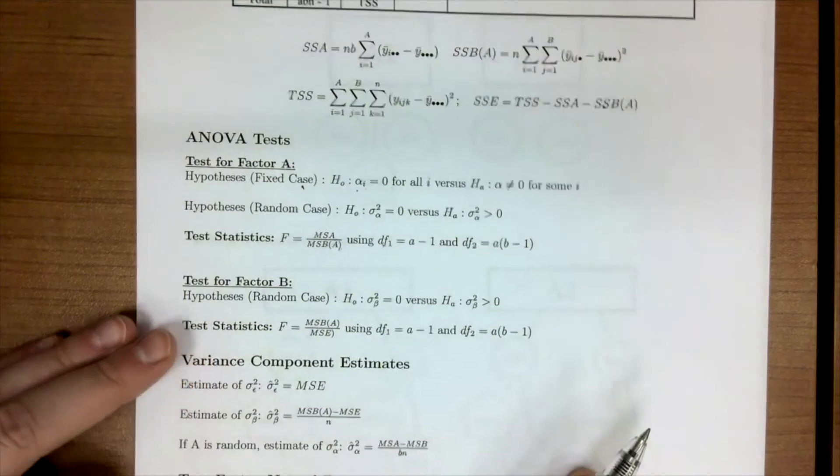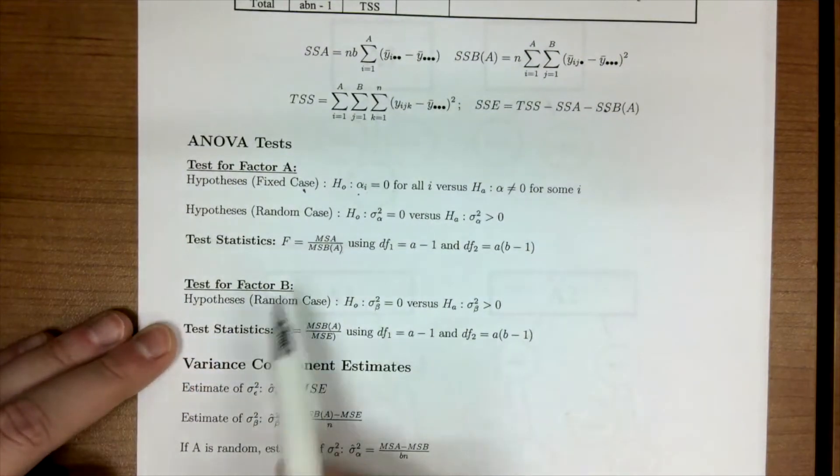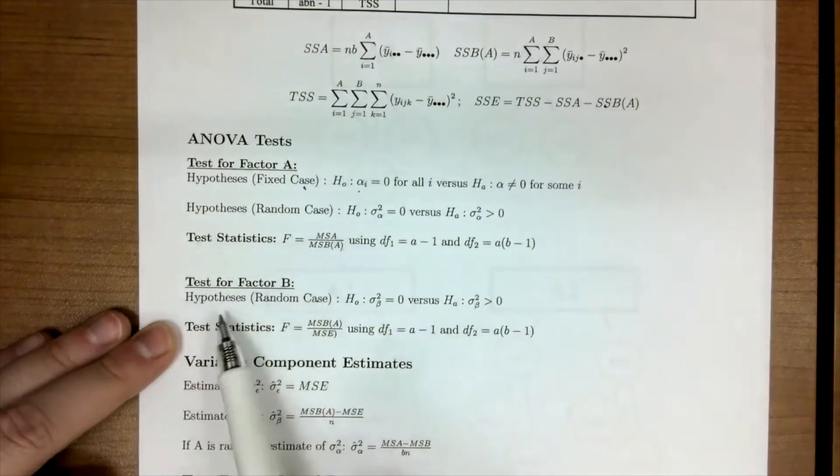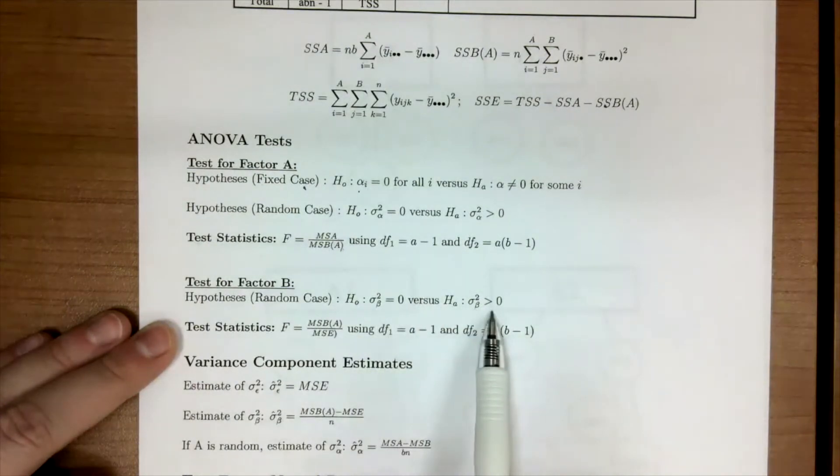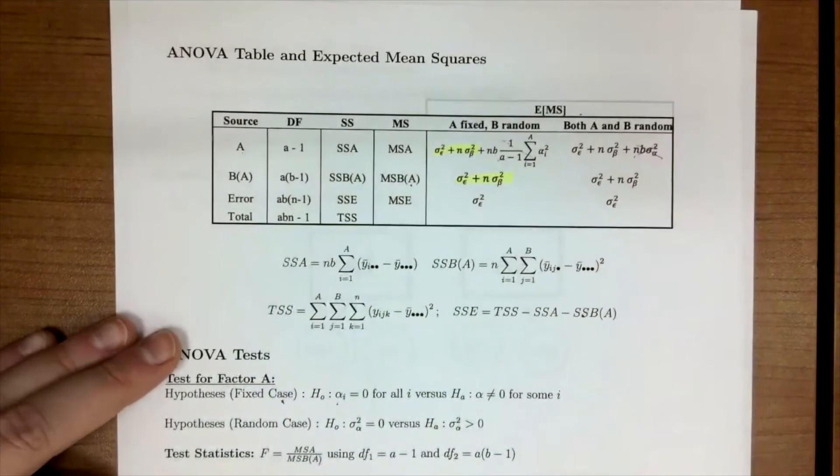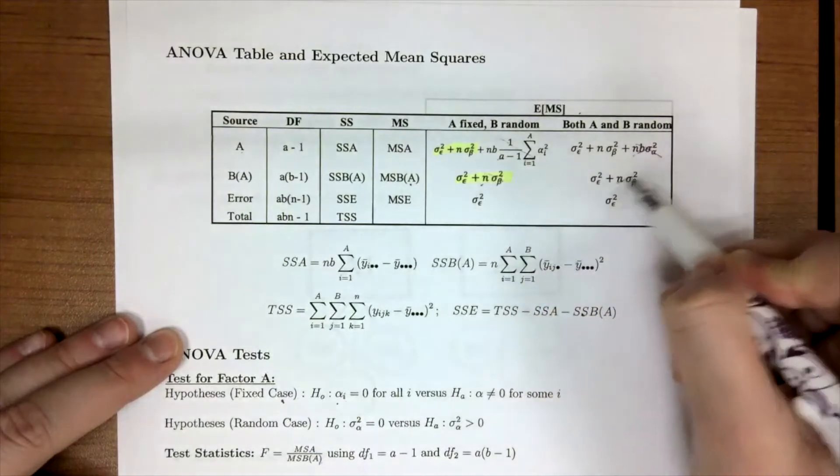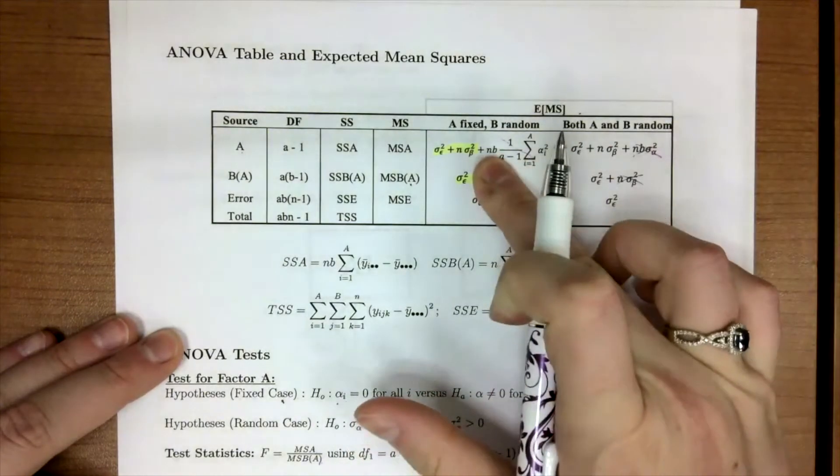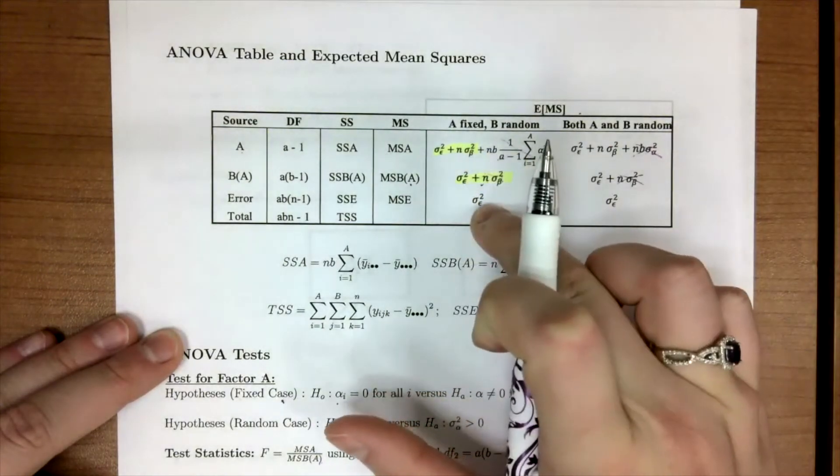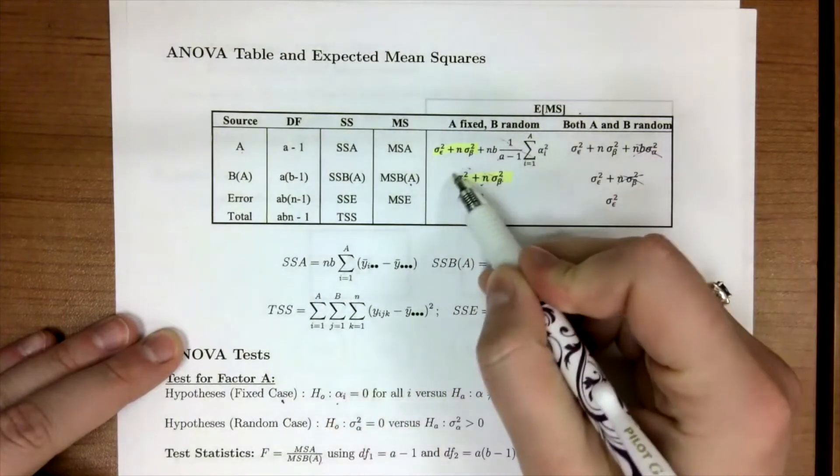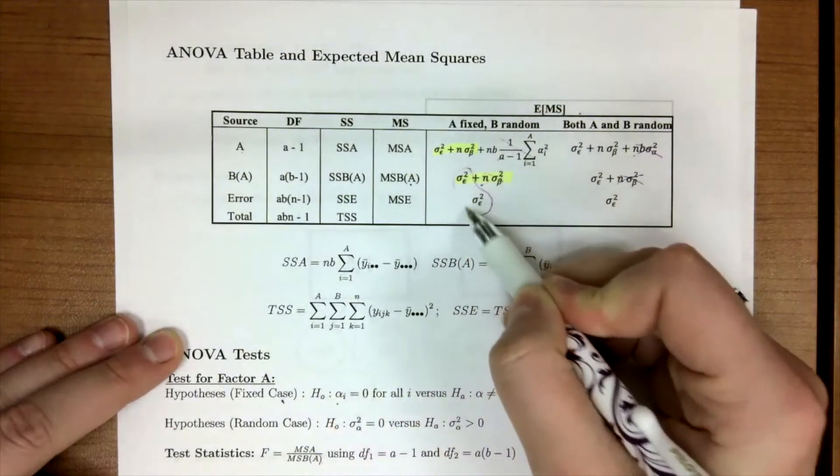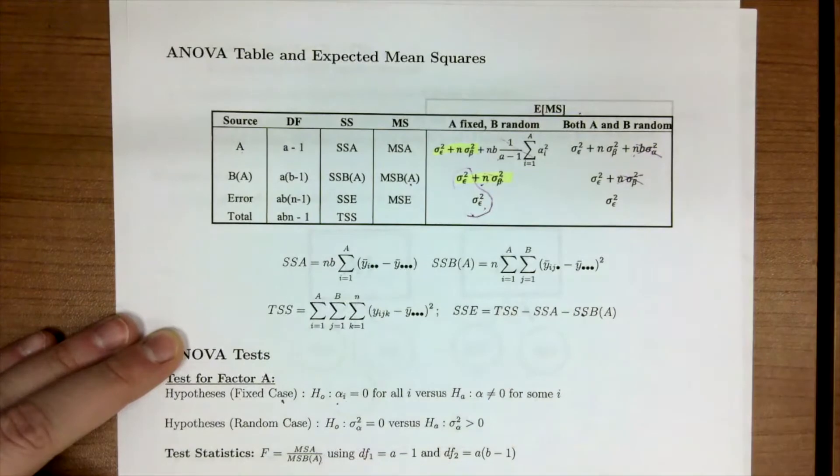For our factor B, or our nested, we would have a hypothesis of σ²_β equal to zero, and of course, the alternative is greater than. And if we come up here, under the null, this, for both cases, would be cancelled out. We'd be left with the σ²_ε. And we can tell that these two match. And so we know that this is going to be our denominator.